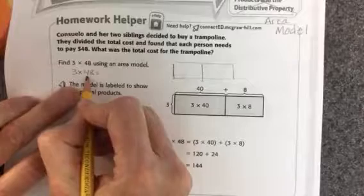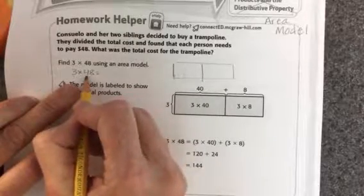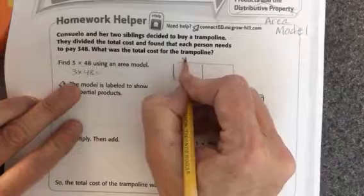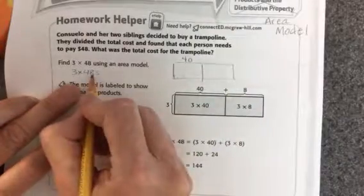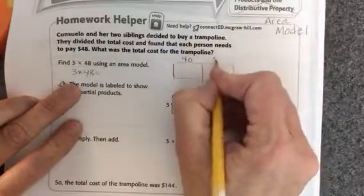Now I'll look at my 4 and ask myself, what is the value of the 4? The value of the 4 is 40, so I write 40 here, and the value of the 8 is 8, so I write 8 here.